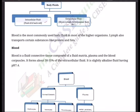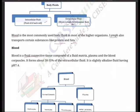Blood is the most commonly used body fluid in most higher organisms. Lymph also transports substances like proteins and fats. So basically there are two fluids that help us: blood and lymph. Blood is a fluid connective tissue — it's a type of connective tissue composed of fluid matrix called plasma.